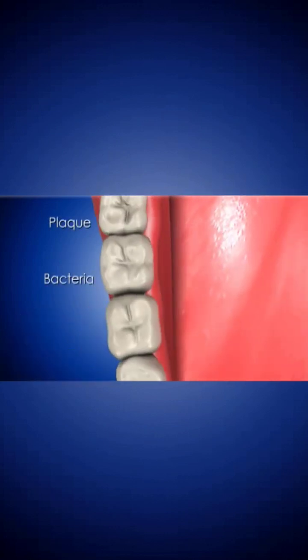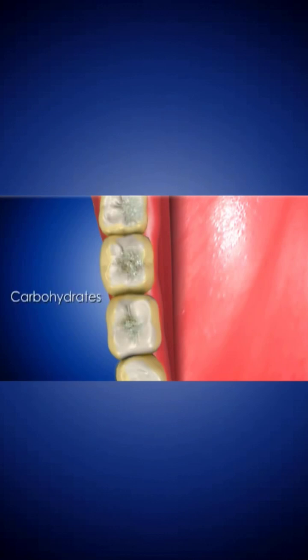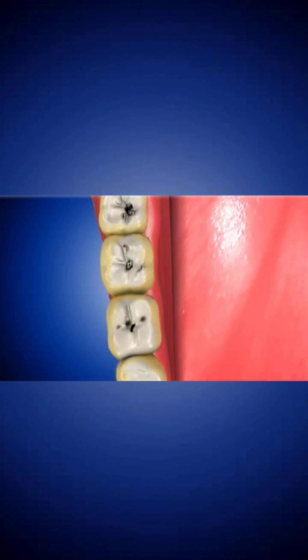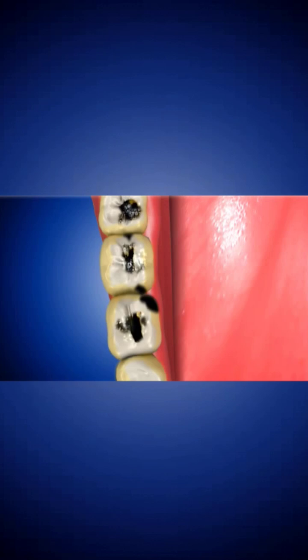Some of the plaque bacteria convert sugar and carbohydrates — starches in the food we eat — into acids. These acids dissolve the surface of the tooth, forming microscopic pits or erosions that get larger over time. The damage can occur anywhere the tooth is exposed to plaque and acid.